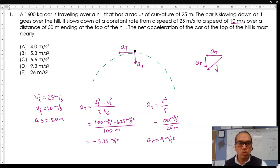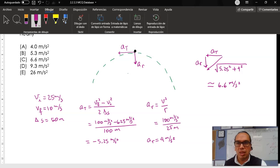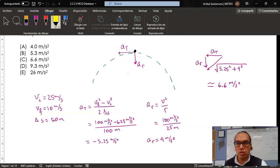And that's going to be the square root of 5.25 squared plus 4 squared, which is approximately equal to 6.6 meters per second squared. That is option C.